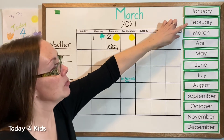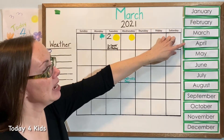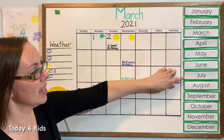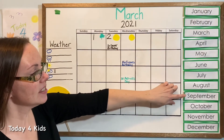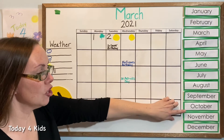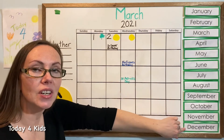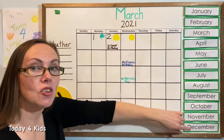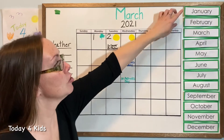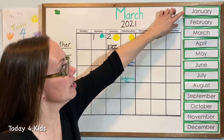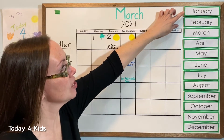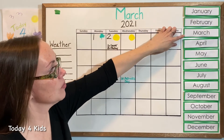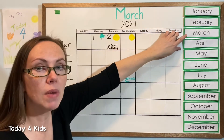January, February, March and April, May, June, July, August, September, October, November, December. Good job. Let's go back up to the top. Do you remember which month we are in? The third one down. One, two, three — we are in March. And we always put it at the top of our calendar.